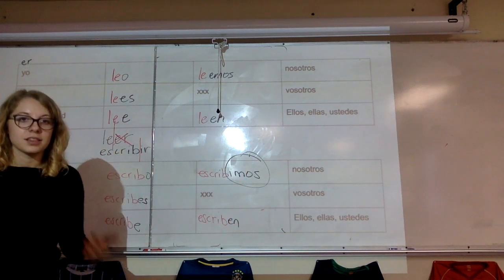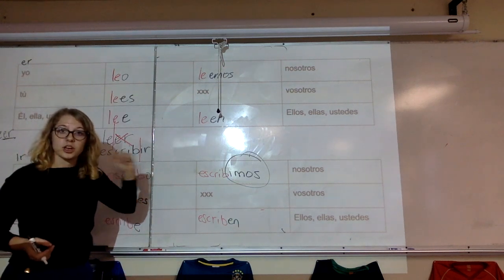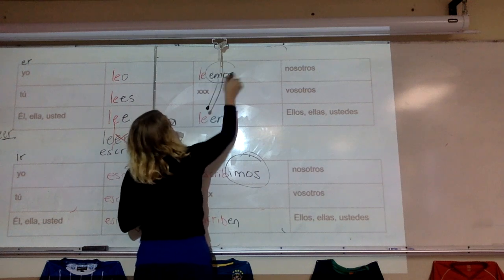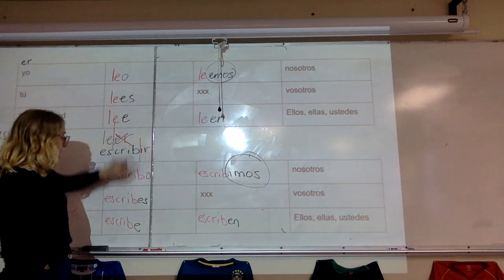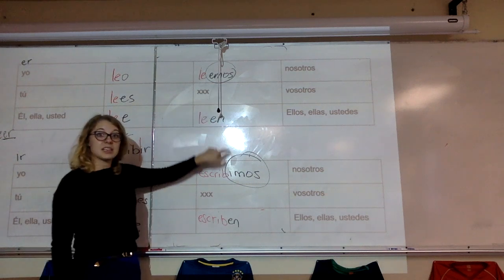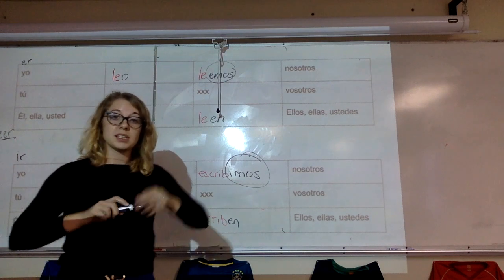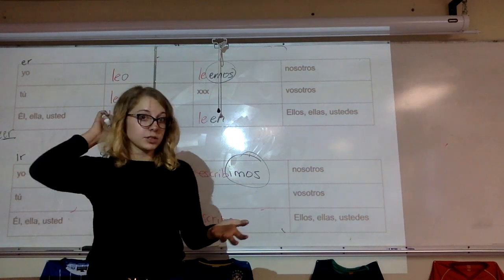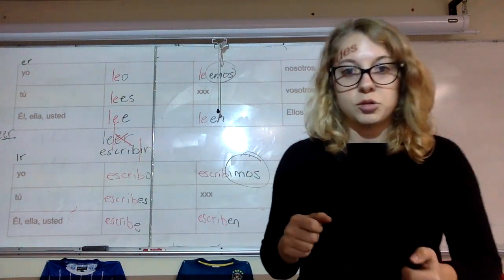I want you to notice that the only difference among these conjugations occurs between the nosotros form. So, it's still o, es, e, emos, imos, en. So, the only difference is in the nosotros form. That's what makes ER and IR verbs very easy for teachers, because we like to put them together. So, the only big difference is that nosotros form.